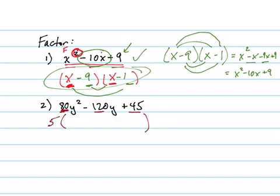So if I take a 5 out of all of these, what's going to be left? What's 80 divided by 5? Well, 5 goes into 50 ten times, and then there's 30 left over. How many times does 5 go into 30? 6. Good. So 16. That's how you do it in your head. How many times does 5 go into 120? Well, 10 goes into 120 twelve times, so 5 goes into 120 twenty-four times. Good. And how many times does 5 go into 45? 9 times. All right.